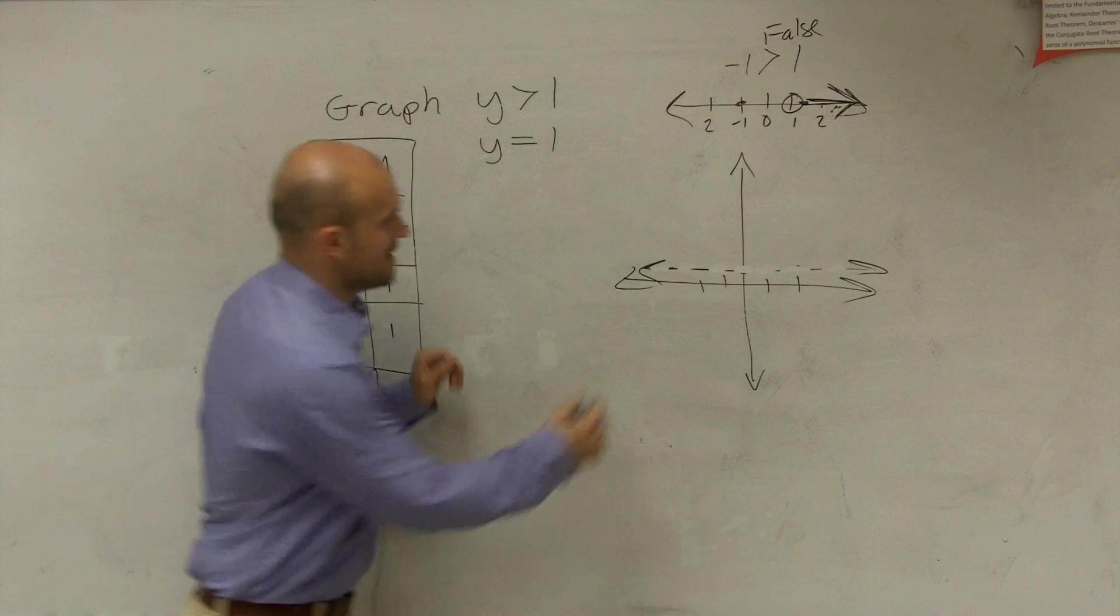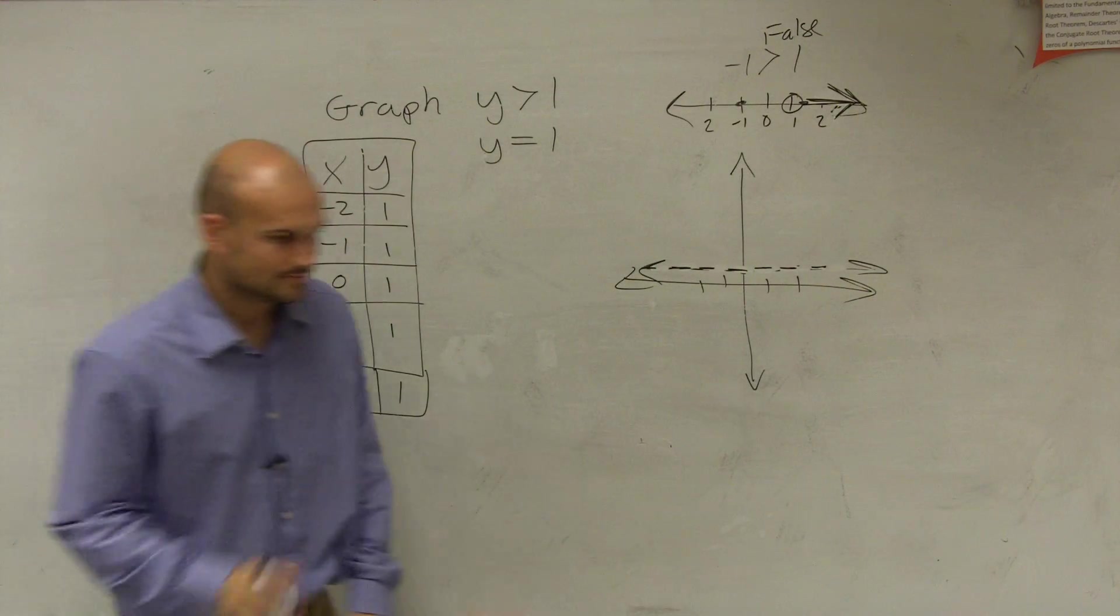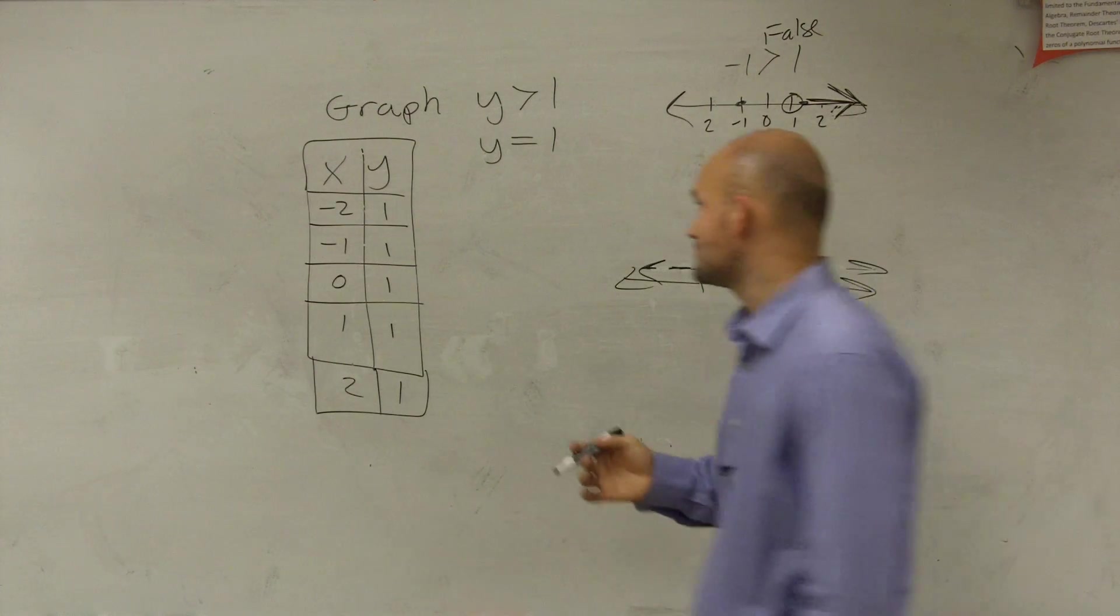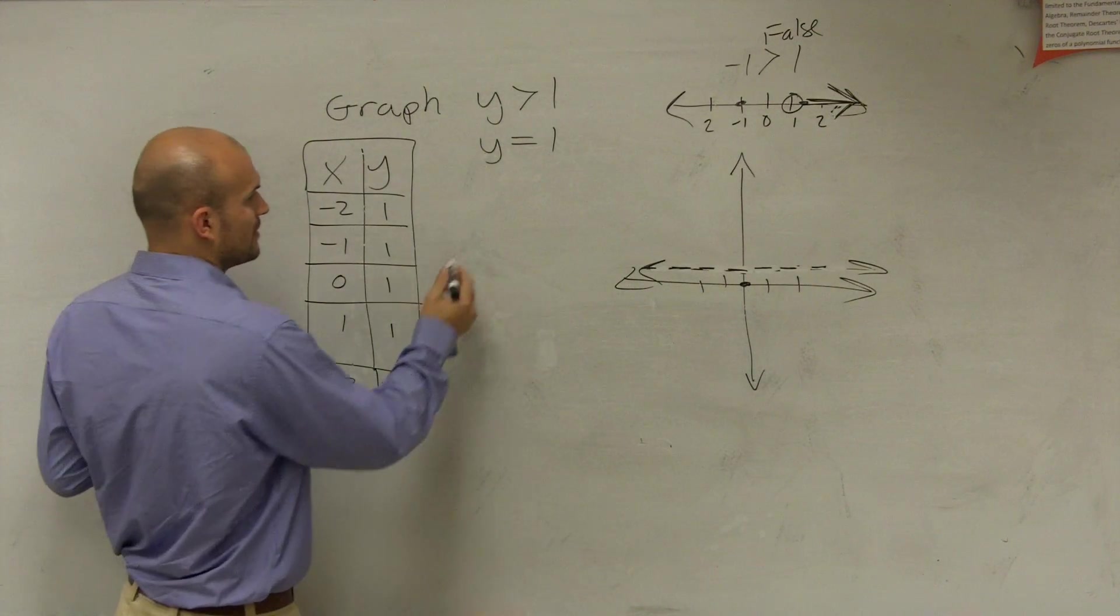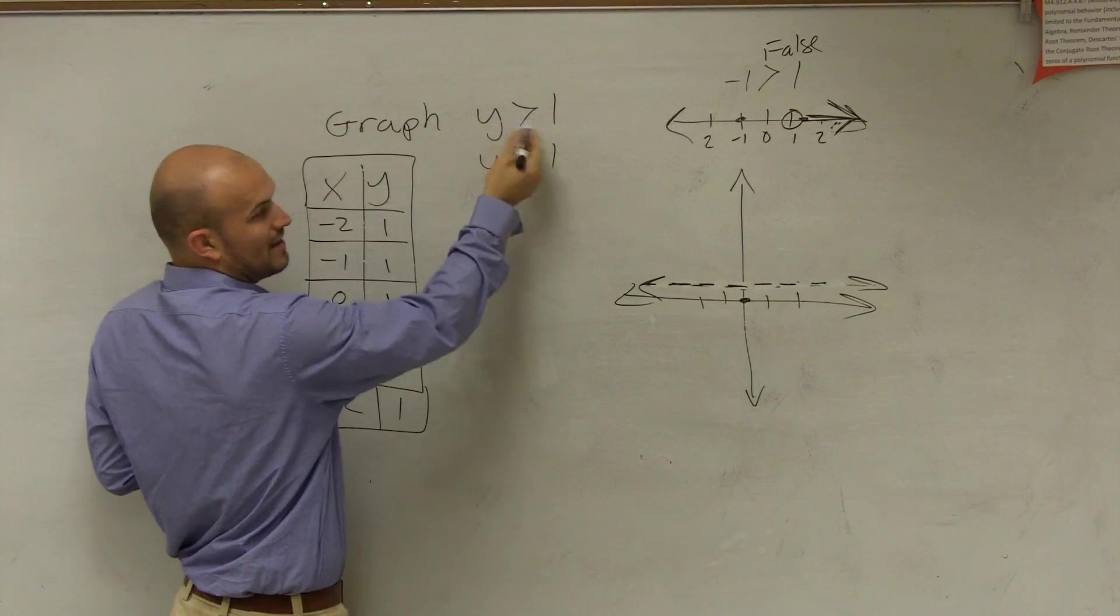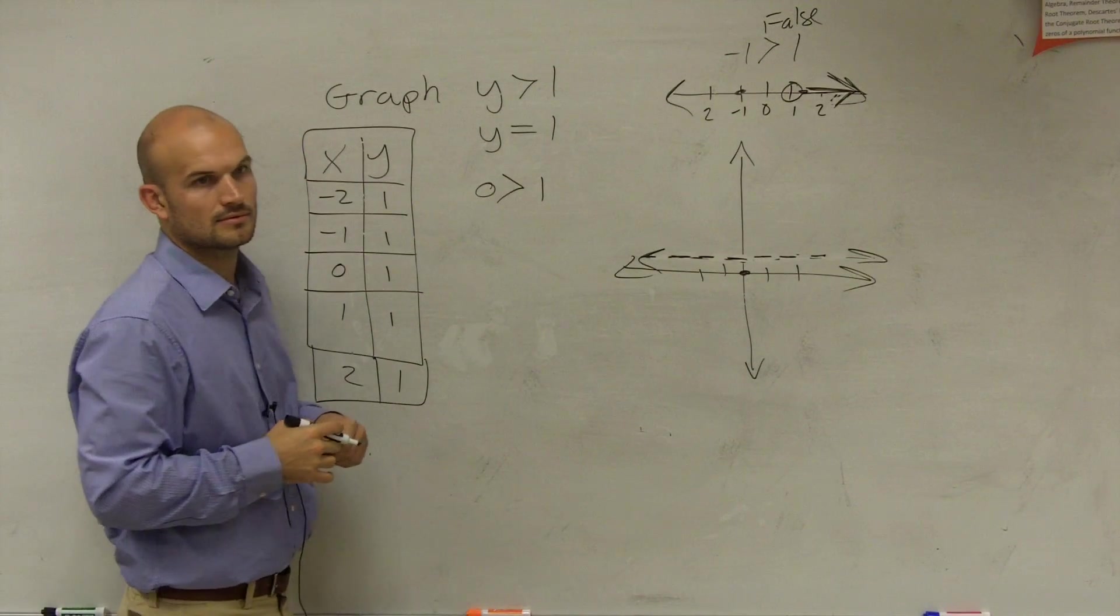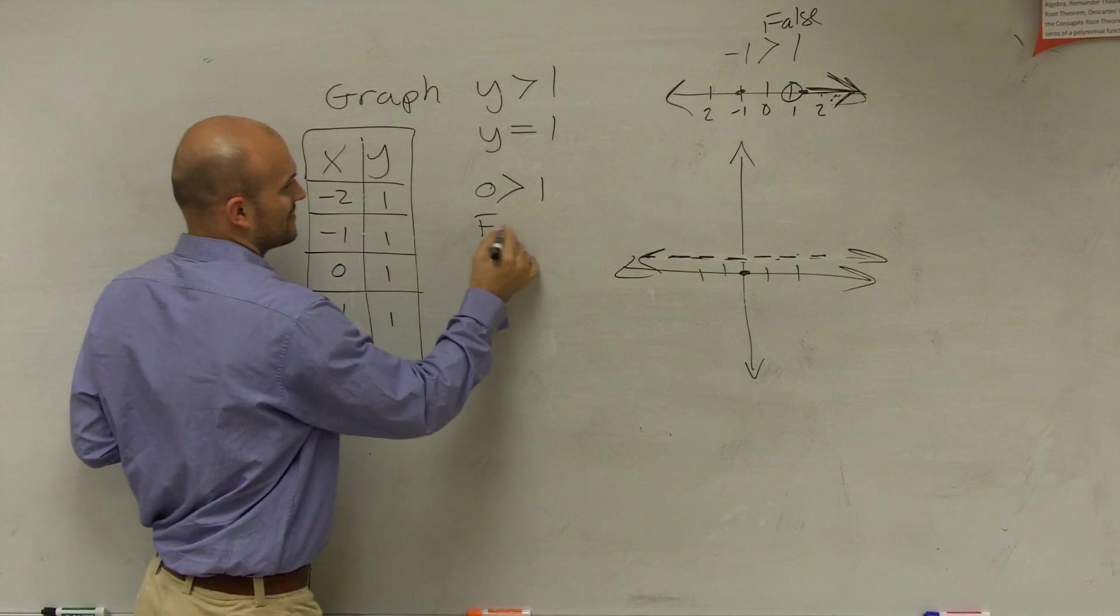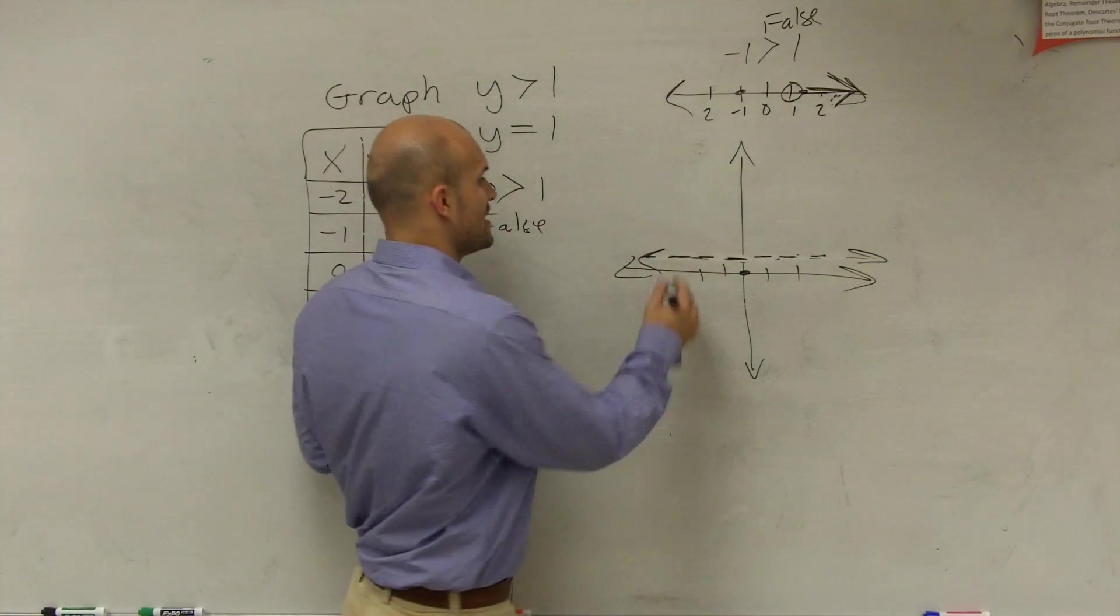So on this graph, so we have this dashed line, right? We need to pick a test point. The best test point ever to pick, ever to pick, is exactly 0, 0, exactly. Unless your line goes through 0, 0, then you're going to want to pick another one. So the next thing you're going to want to pick is 0, 0. So all I do is I don't have an x and a y, I can only put in the y value. So is 1 greater than 0? Is 0 greater than 1? No. No, that's false, right? So instead of shading down, I have to shade the opposite direction. So I'm just going to kind of draw these extra lines.